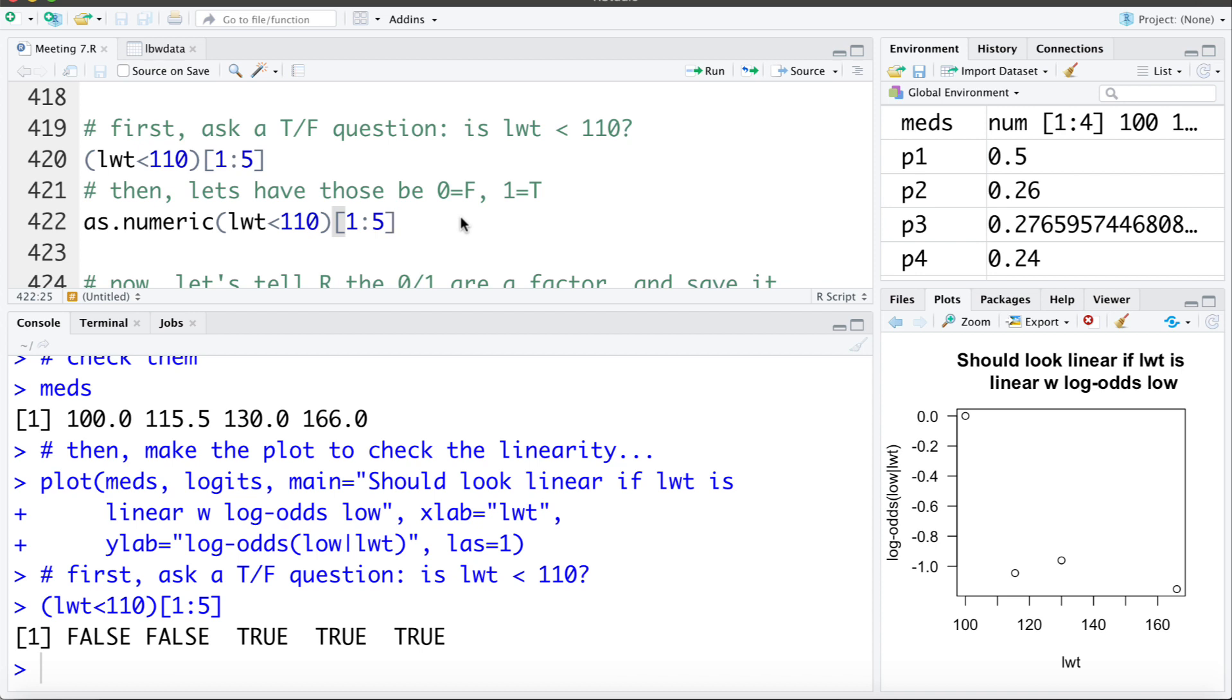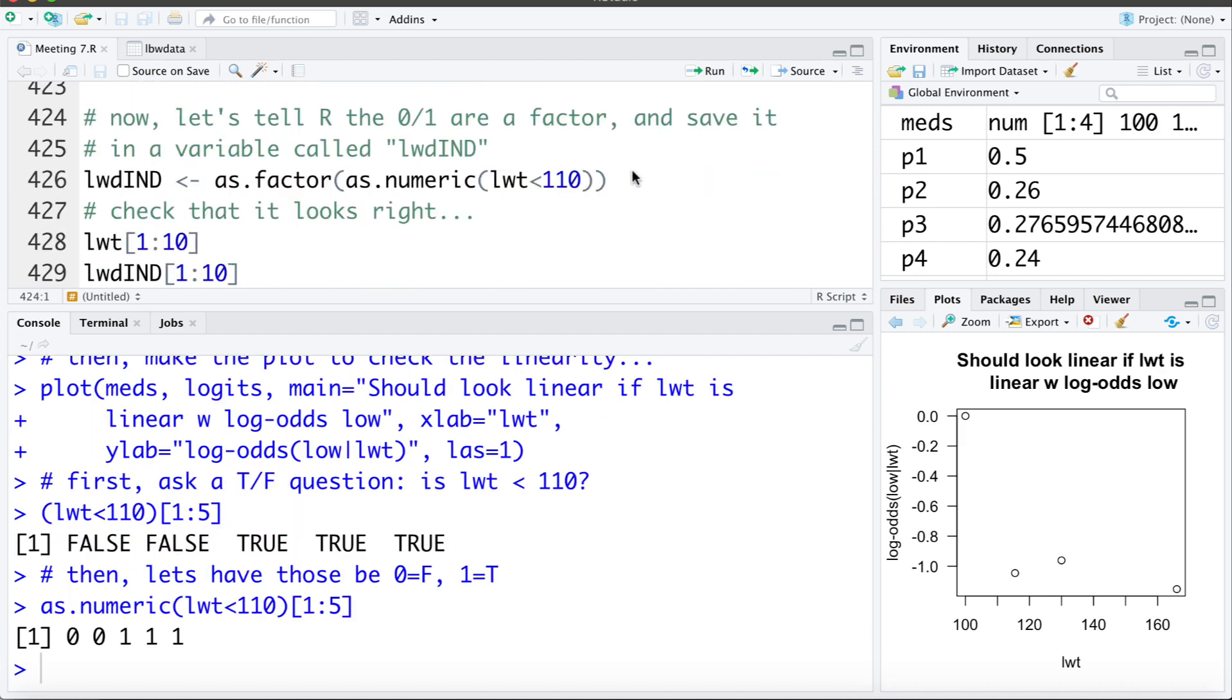Now the next thing I can do is use that same command, but as.numeric is going to have R convert these. False being a zero, one being a true. So let's look at that. Okay now the final thing that we're going to want to do is tell R that these zeros and ones are factors. So we're going to use that same command, but I'm going to add an as.factor here. Again telling R that the zeros and ones are categories not numeric values. So we're going to do that. And I'm going to save it as LWDIND capital IND or LWD indicator. So let's create that variable.